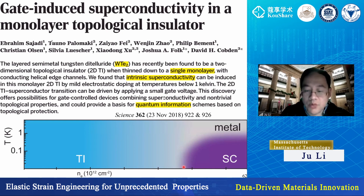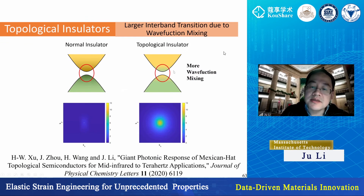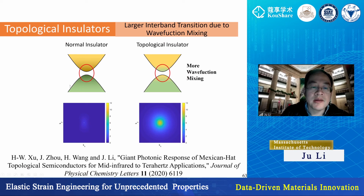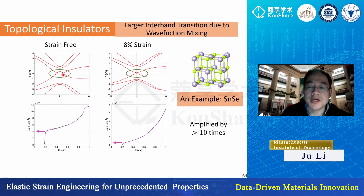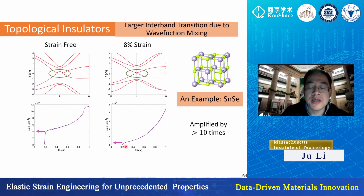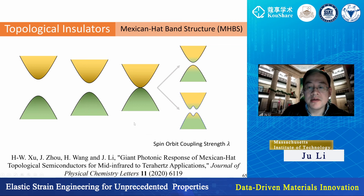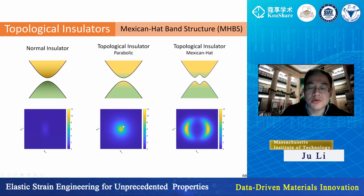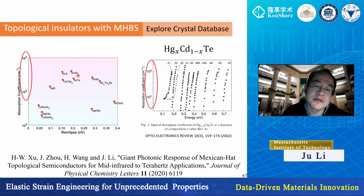Following that work, we continued exploring other properties. With a Peierls band inversion you get much bigger wave function mixing. For topological insulators with so-called Mexican hat topology, you get a much bigger infrared response. We predicted for tin selenide that strain-free and strained results look similar, but you get a huge infrared absorption at a 0.2 eV edge. For monotrichalcogenides, we predict a factor of 10 bigger gain or absorption compared to commercial infrared detectors.